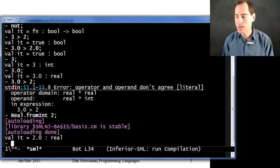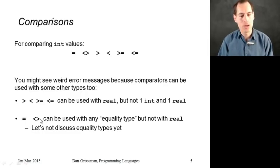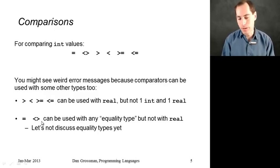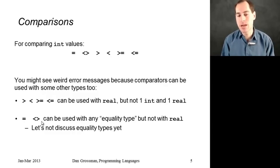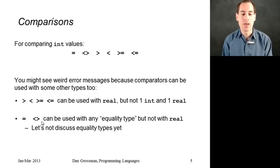One more complication now that I've mentioned reals: you cannot in ML use equal or not-equal on reals. You can use them on lots of types — we'll talk about this in the future — called equality types. Ints are just one example of an equality type, but real is not an equality type. This is actually enforcing something good in any programming language: because floating point numbers are subject to round-off errors, it is rarely the right thing to take two floating point numbers and see if they're exactly equal. You should always check if they're within some small epsilon, some small range of each other.